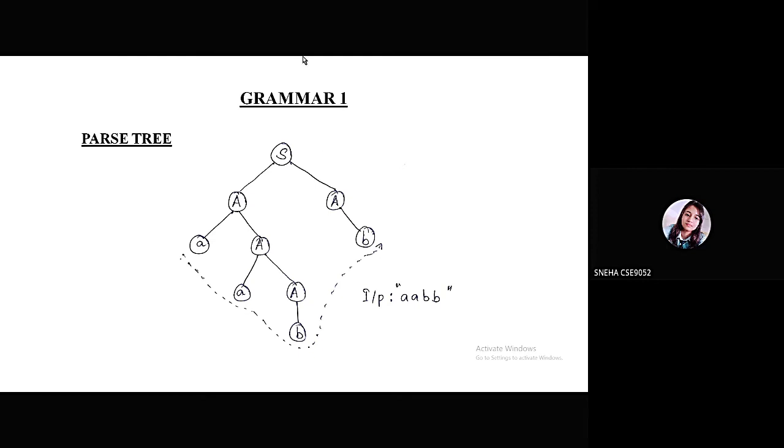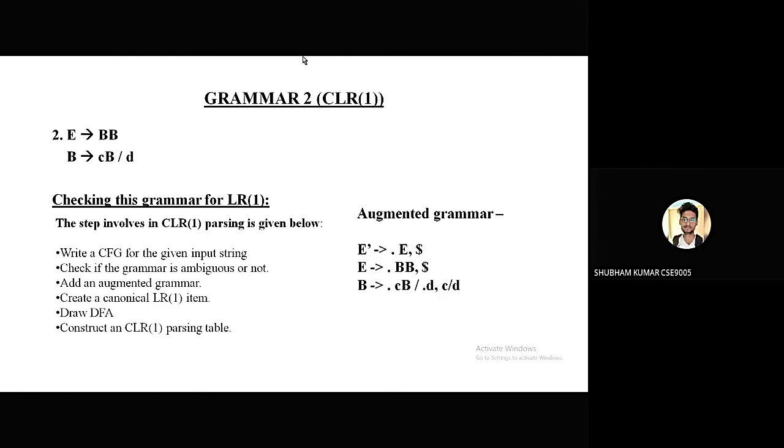Expression with E tends to BB, and B tends to C B slash B. Our objective is to find a parsing table, but to make this table, we will have to follow certain steps. The first step is to write a CFG for the given input string and check if the grammar is ambiguous or not. Our grammar is ambiguous here.